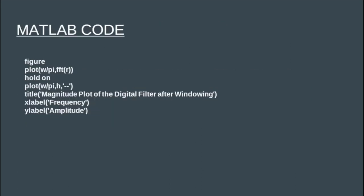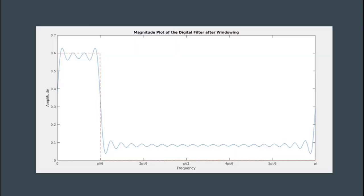Now let's plot the magnitude response of the designed digital filter. We find the Fourier transform of R using MATLAB's FFT command, then plot it with respect to omega. The output shows clear passband and stopband ripples, and we can also observe that the amplitude starts attenuating around π/6.